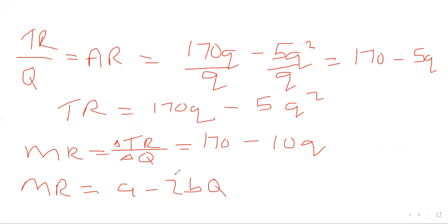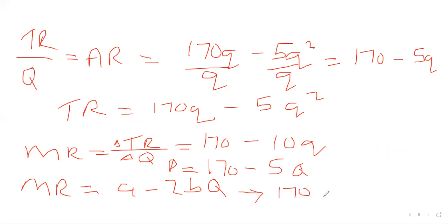Now marginal revenue has two formulas. Sometimes marginal revenue will simply be A minus 2bQ as a shortcut. Since our price was 170 minus 5Q, you just multiply the 5 by 2 to get 10Q. This gives us 170 minus 10Q — the easiest way, where the number before Q is doubled.